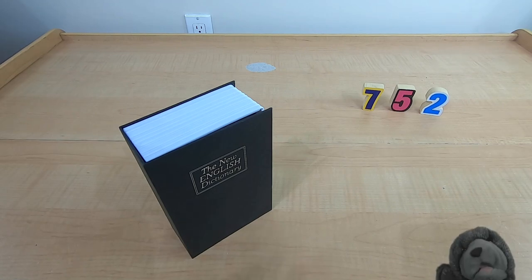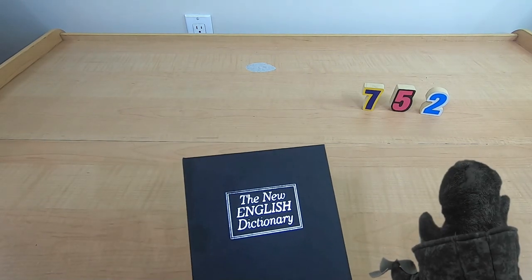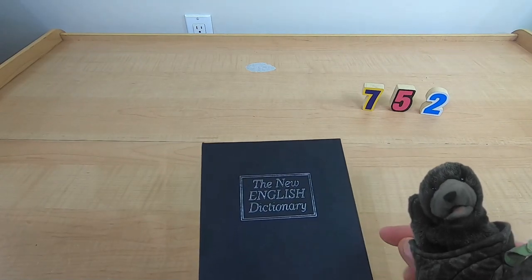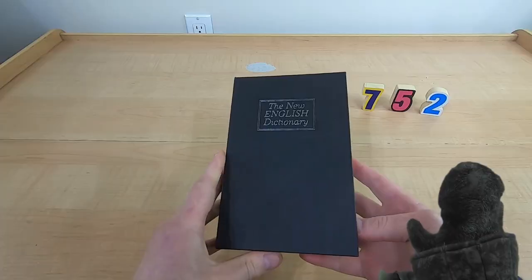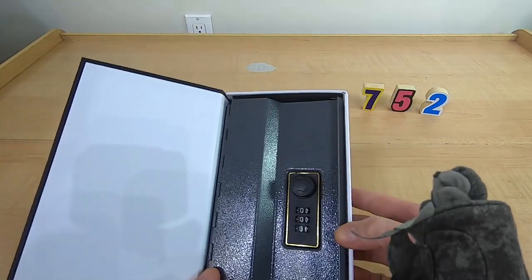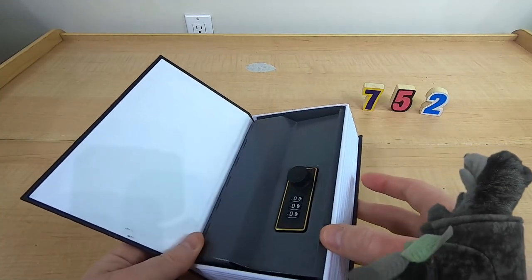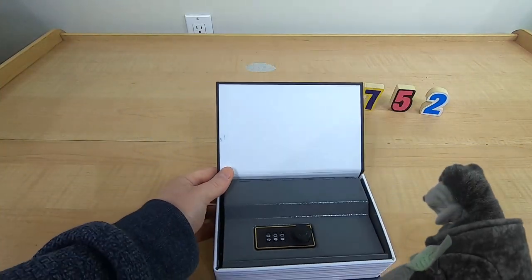This here is a very big book. It's called the dictionary. Look how big this is, the New English Dictionary. I bet there's a lot of pages inside. Wait, that's not what the inside of a book looks like, Tree Bear. What's going on here? There's some kind of weird... those aren't even pages.